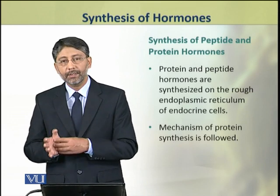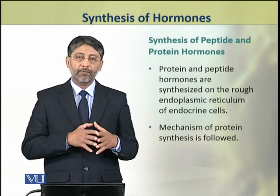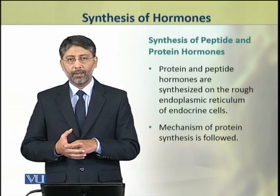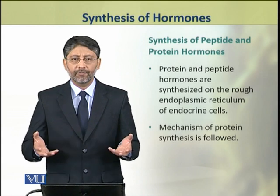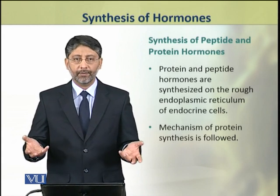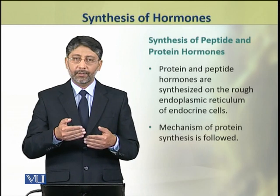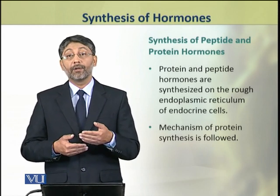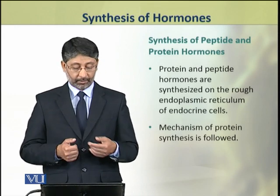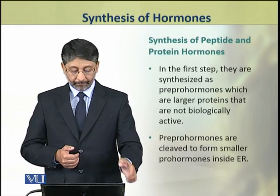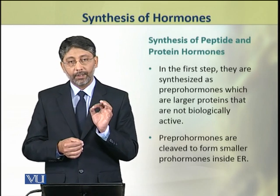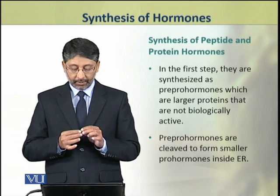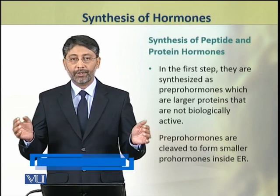Peptide and protein hormones are synthesized on the rough endoplasmic reticulum of endocrine cells. It follows the mechanism of protein synthesis in the cell: transcription, translation, and post-translational modifications. The hormones in the first step are produced as large proteins.